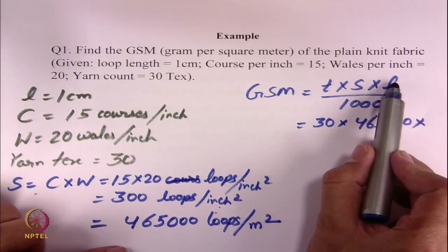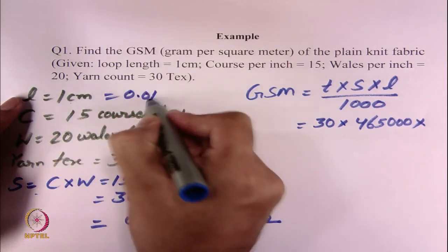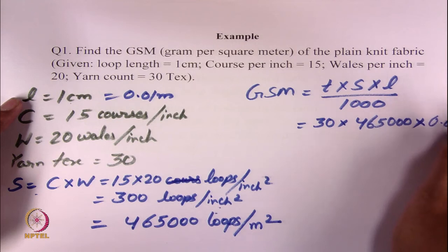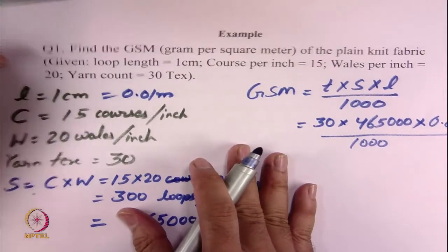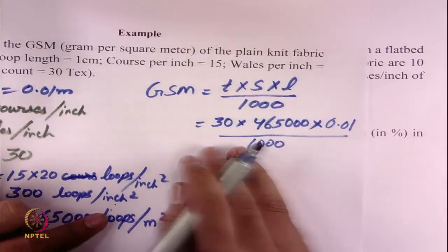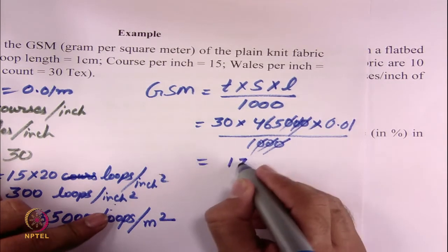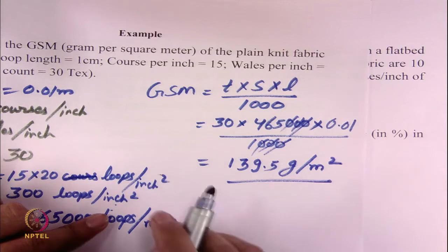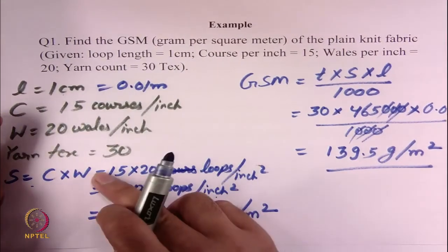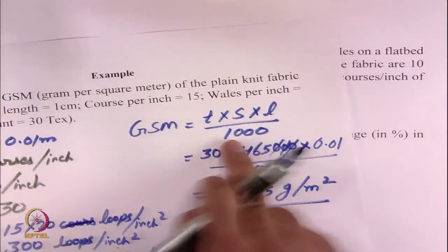The unit of L must be in meters — L is 1 centimeter, which you convert to 0.01 meters. So GSM = 30 × 465,000 × 0.01 / 1000. This comes to around 139.5 grams per meter square. I hope you can see that once you know some of the fabric structural parameters, you can find out its weight per square meter. This relationship is extremely valuable.